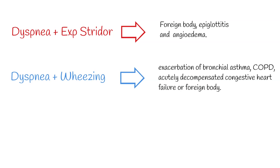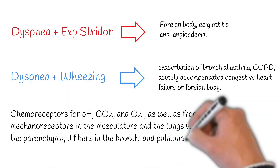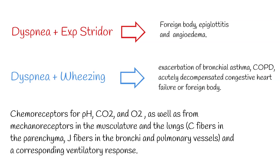The pathogenesis of dyspnea is still not fully clear and is now under investigation. Current explanatory hypotheses are based on the concept of a regulatory circuit consisting of several components, including chemoreceptors for pH, CO2, and O2, as well as mechanoreceptors in the musculature and the lungs, C-fibers in the parenchyma, J-fibers in the bronchi and pulmonary vessels, and a corresponding ventilatory response.